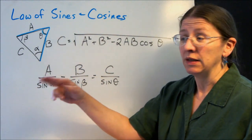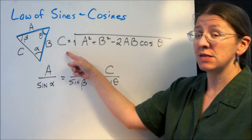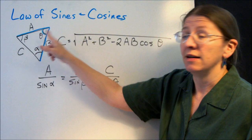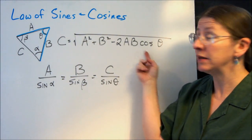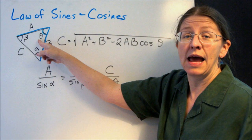Any triangle, it doesn't have to be a right triangle, any triangle will have this where c, this side, is the square root of a squared plus b squared minus 2ab times the cosine of the angle in between them. So that would be this angle right here.